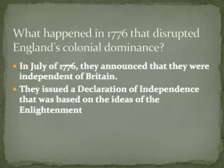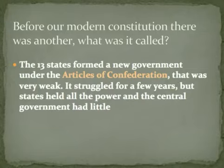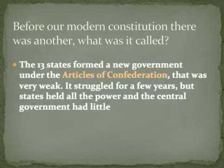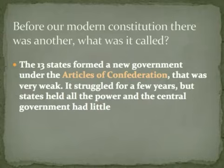In July 1776, the colonies announced independence by signing and sending out the Declaration of Independence on July 4th, letting the world know they were now independent. Before the modern Constitution, the government was set up under the Articles of Confederation — a very weak document that tied the states together loosely. States had their own money, trade agreements, armies, and taxes. This was inefficient, so eventually the Articles were scrapped and the current Constitution was written.